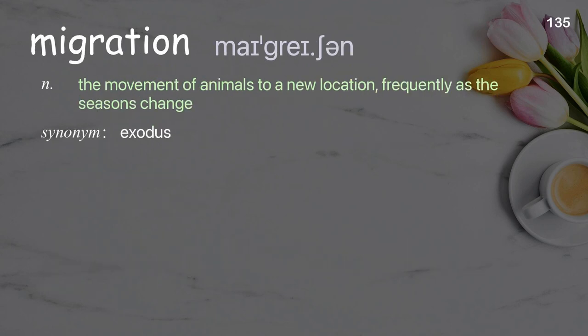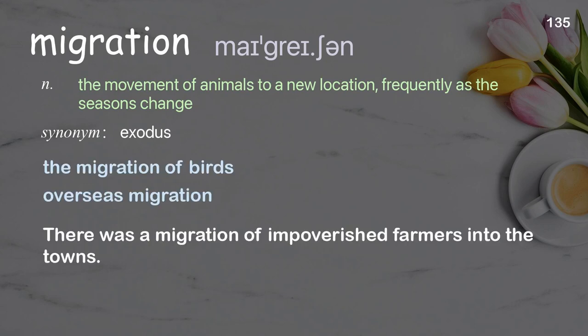Migration: the movement of animals to a new location, frequently as the seasons change. Examples: the migration of birds, overseas migration. There was a migration of impoverished farmers into the towns.